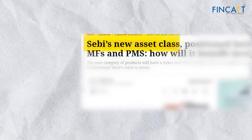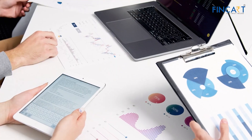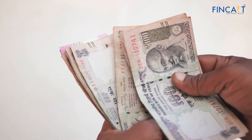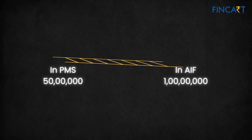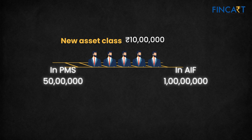Today we talk about the new asset class that SEBI has proposed as a consultation paper. We've already had PMS and AIF covering all this. SEBI proposed this because in PMS the minimum investment limit was 50 lakh, while in AIF it was 1 crore. By creating a new asset class, this will ensure that a larger investor audience has access to a new category of investment generally not available in the mutual fund domain.